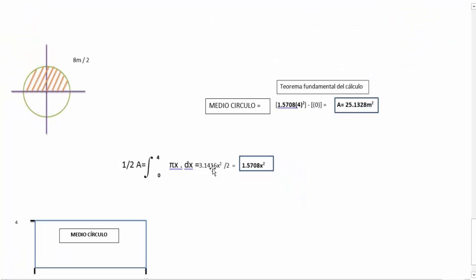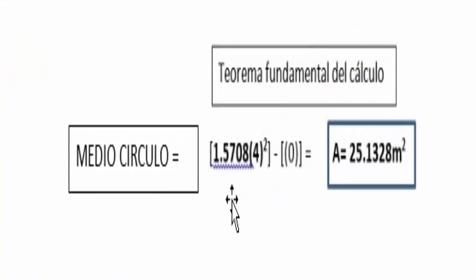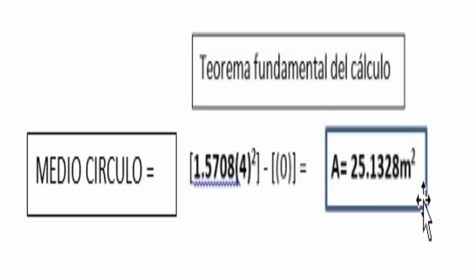Sería igual a 3.1416 x² sobre 2, simplificando es 1.5708 x². Aplicando el teorema fundamental del cálculo, quedaría 1.5708 por 4 al cuadrado menos 0, y como resultado nos quedará 25.1328 m².